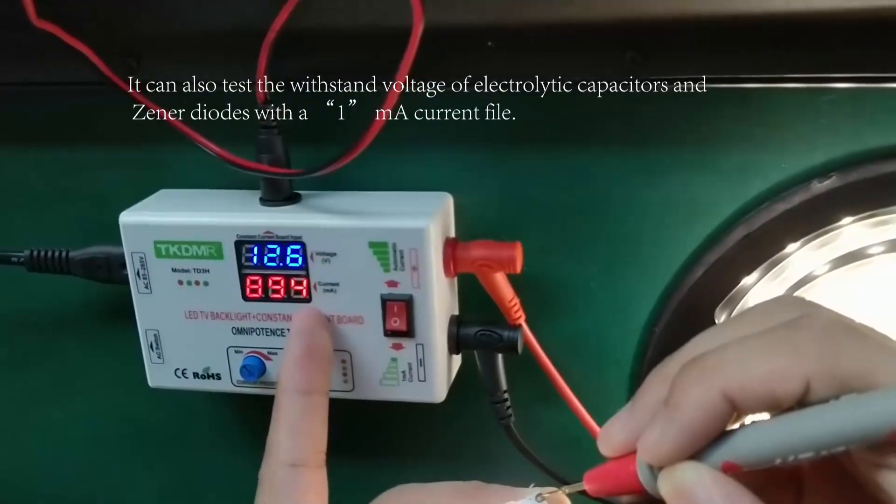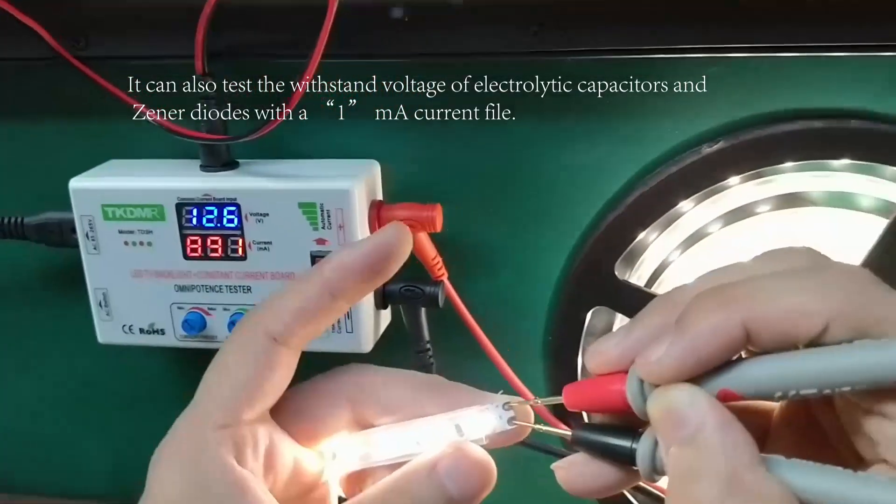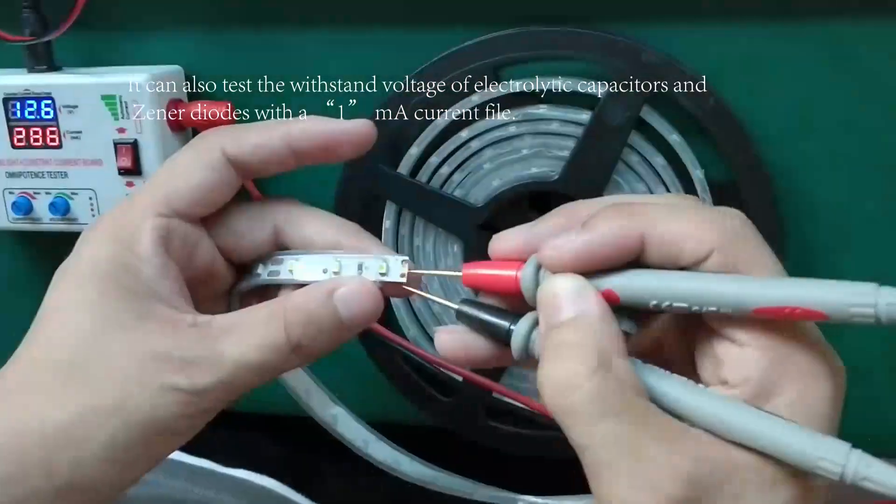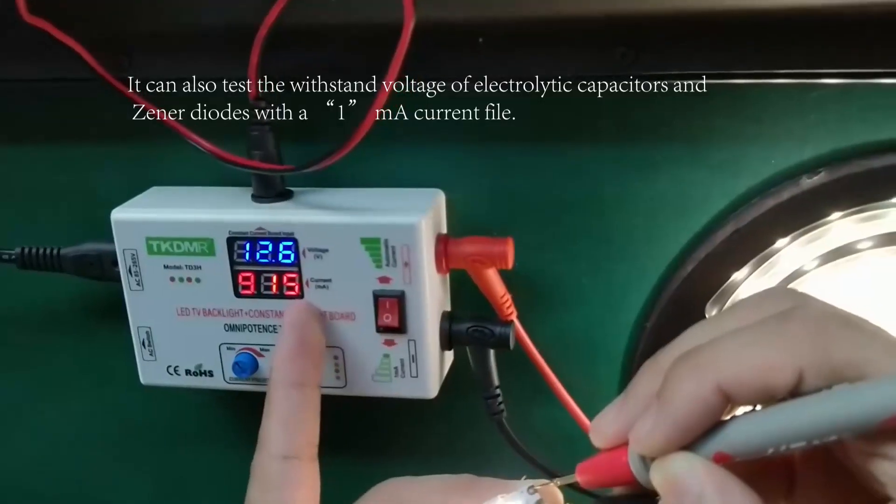It can also use the 1 milliampere current file to test the withstand voltage of the pointy compression capacitor and zener diode.